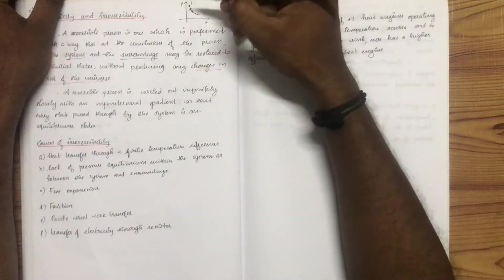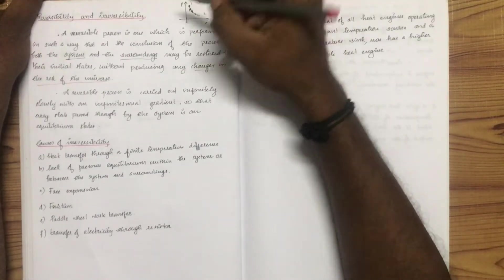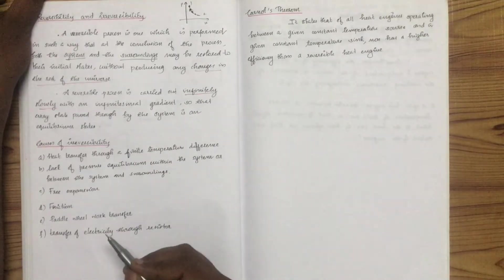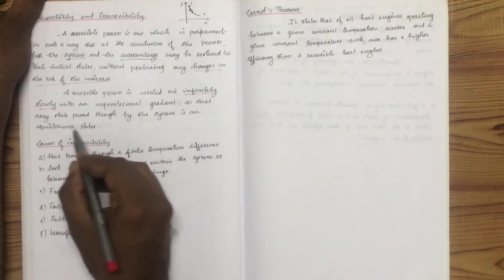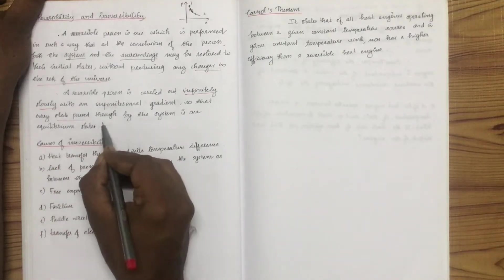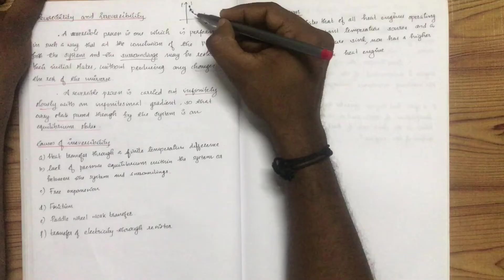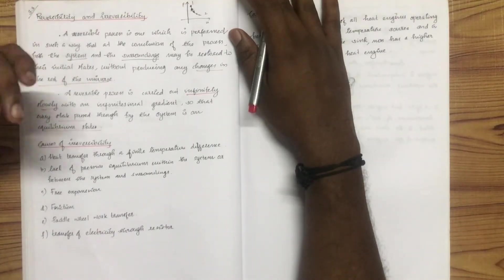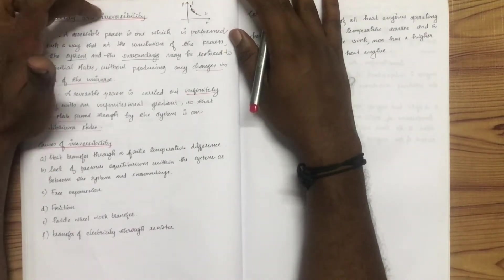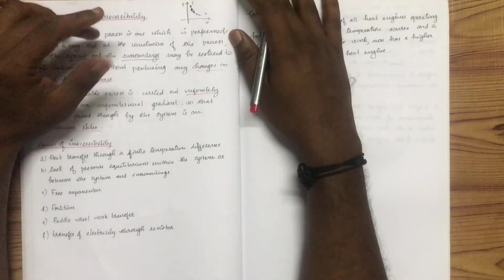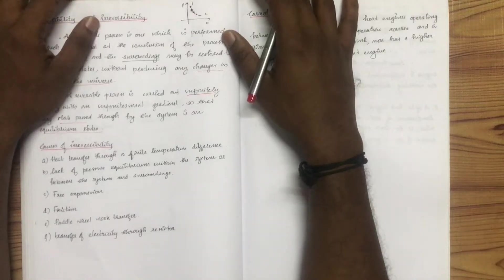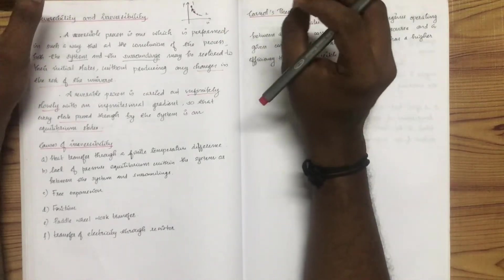The system is restored to the rest of the universe. The process is carried out through equilibrium points infinitely slowly, so that every state passed through by the system is an equilibrium state — every point is an equilibrium state.